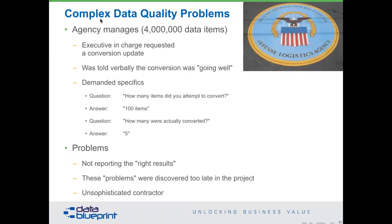Here's the Defense Logistics Agency — a real company, real case study. They managed four million items. The executive in charge requested a conversion update and was told verbally the conversion was 'going well.' Luckily, this individual had been coached, so they asked: 'How many items did you attempt to convert?' — '100 items.' 'And how many actually converted?' — 'Five.' You can imagine the officer in charge was not particularly happy at being told that was 'going well.' The problems were discovered too late, and we had a very unsophisticated contractor involved.